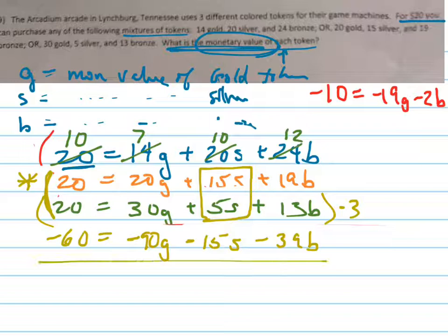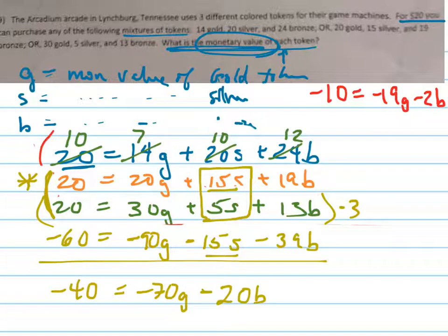I get negative 40 equals negative 70G minus 20B. So I'm going to put this equation up here with the other one. So it's negative 40 equals negative 70G minus 20B. And you can see now that I'm going to have to eliminate one of these, either B or G, and it's much easier to eliminate B by multiplying this top equation by negative 10.